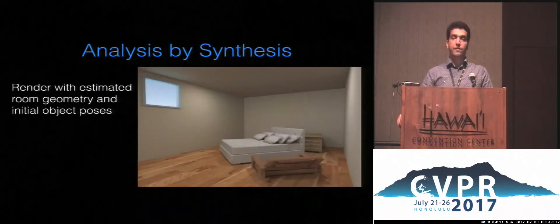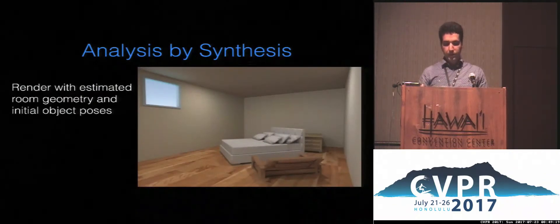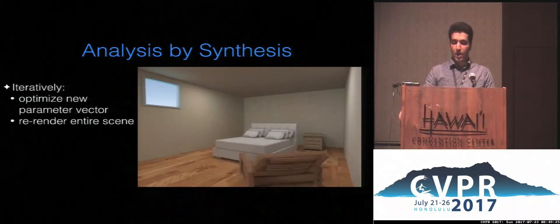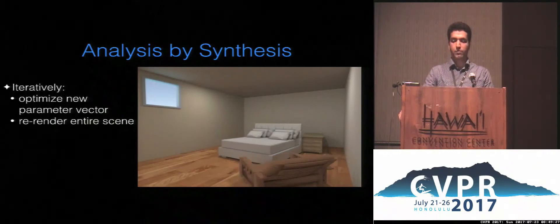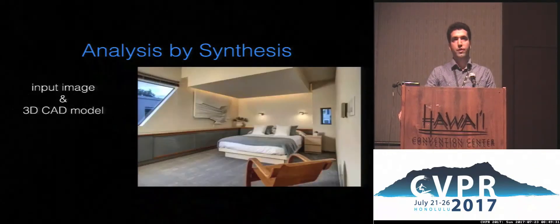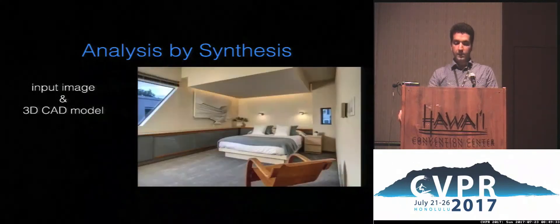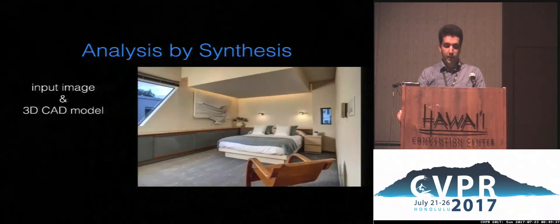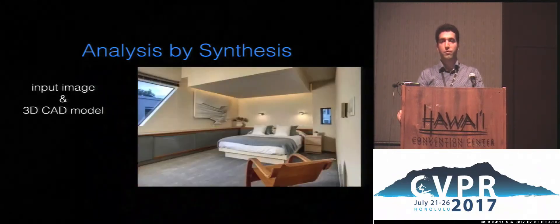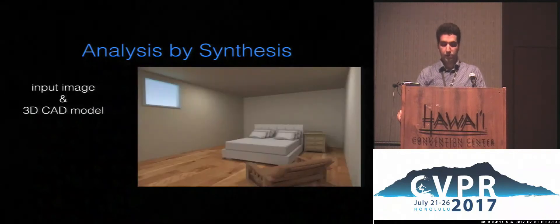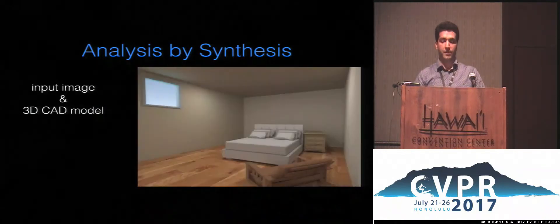We took an analysis-by-synthesis approach where we start with rendering the initial estimate of the objects and room, and optimize for the arrangement of objects in the scene by rendering the entire scene in simulation with a new parameter vector and matching it with the input RGB image. Instead of starting the scene optimization from scratch, we use object detection and pose estimation as well as room geometry estimation as a proxy for the reconstructed scene to initialize the scene optimization.